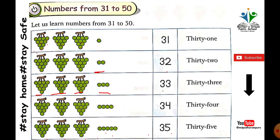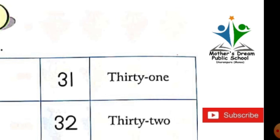So we have covered the numbers: thirty-one, thirty-two, thirty-three, thirty-four, thirty-five.